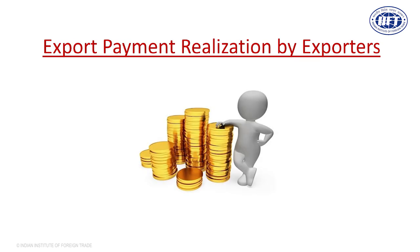Sometimes exporters need to pay commissions to foreign agents. Such commissions are allowed but must be declared on the shipping bill and will be scrutinized by customs authorities. If customs approves, the commission can be paid to the foreign party. Normally, if you are giving a commission of 12% or less, customs generally agrees. But if you are giving a very high commission, you must satisfy the customs authorities as to why such a high commission is being given.